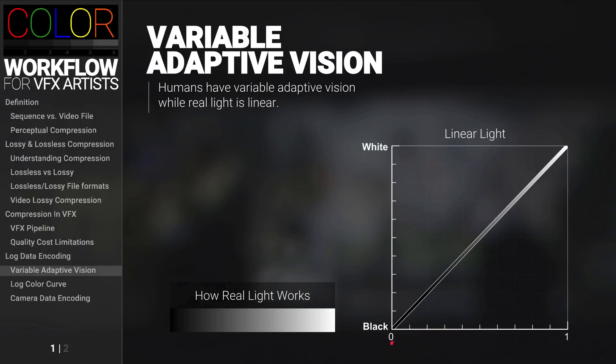Down here is zero — that's absolute black — and we would be going up to one, which is absolute white. And if you remember from a previous presentation, this graph represents normalized color values from zero to one.